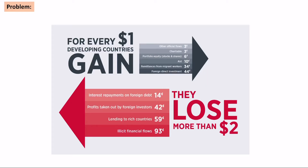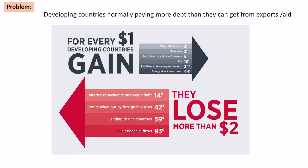The real problem in terms of the development gap is that developing countries often are paying more debt back than they actually get from either the exports they sell or the aid they get. Here's a graph showing that for every one dollar they are getting from exports, aid, or money sent back from people who've migrated, they're actually having to pay back two dollars. And often a lot of that money has come from the developed world given to them in the form of loans, so debt often builds up for these developing countries.